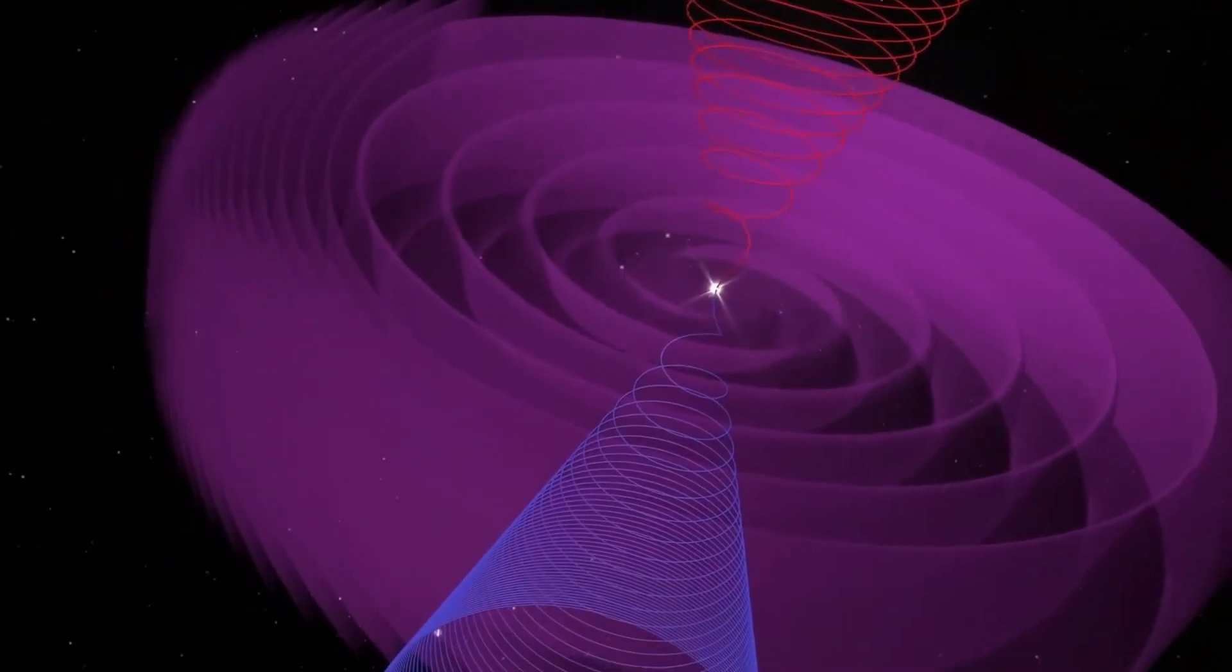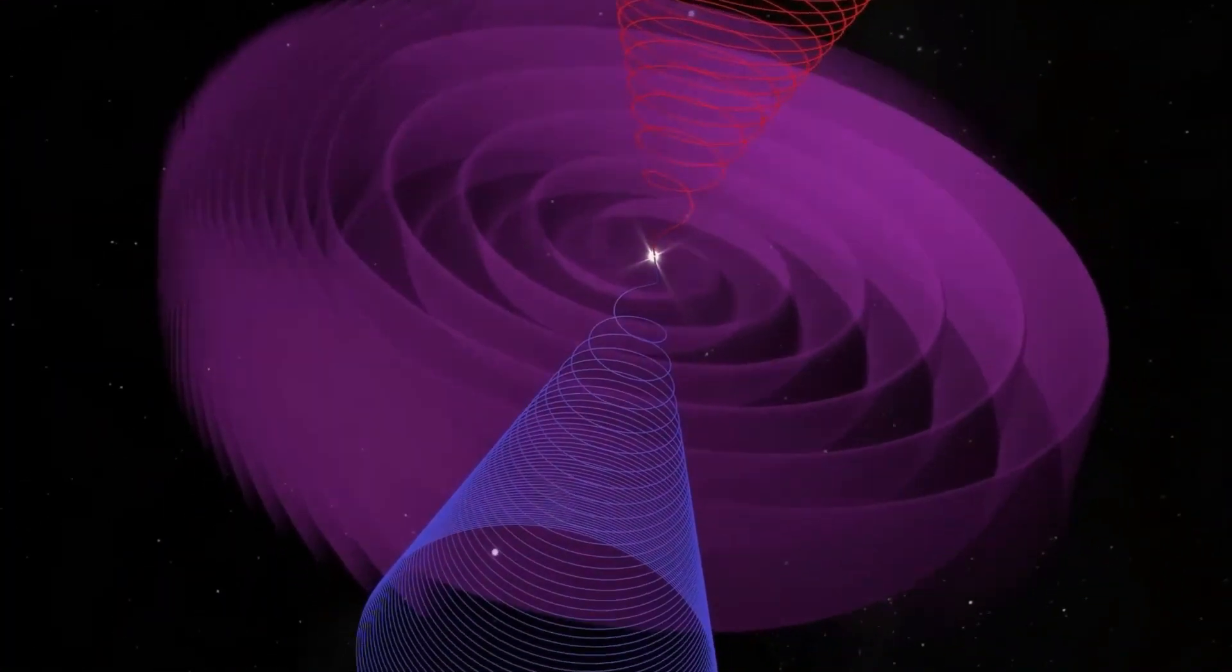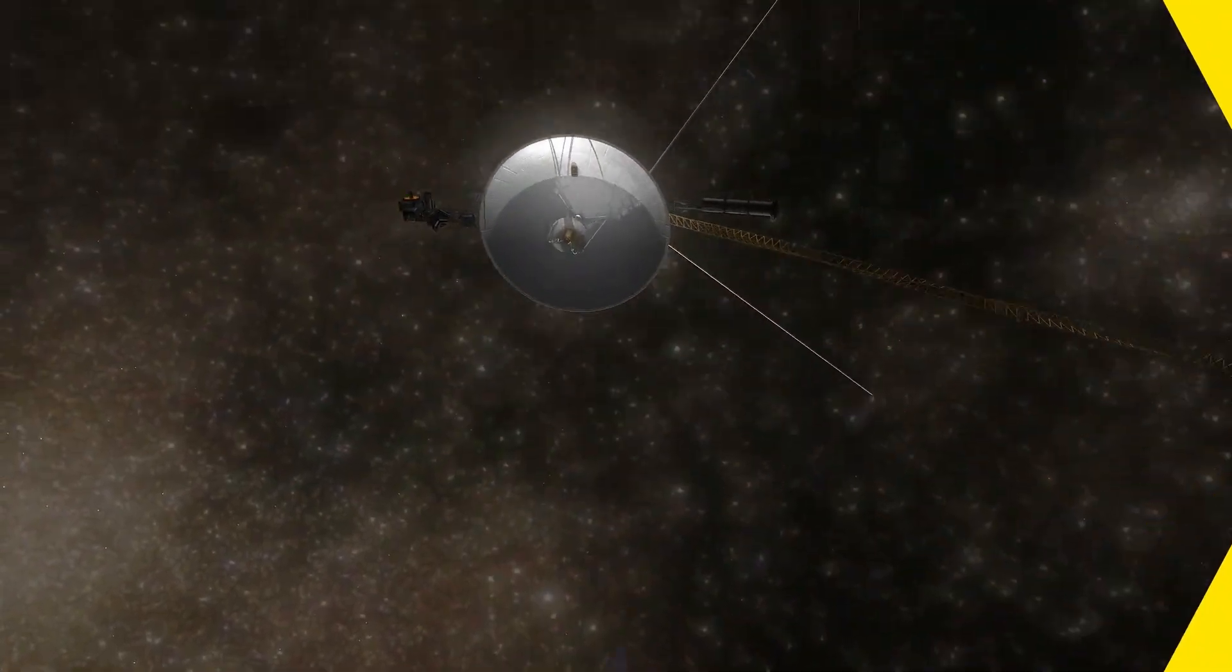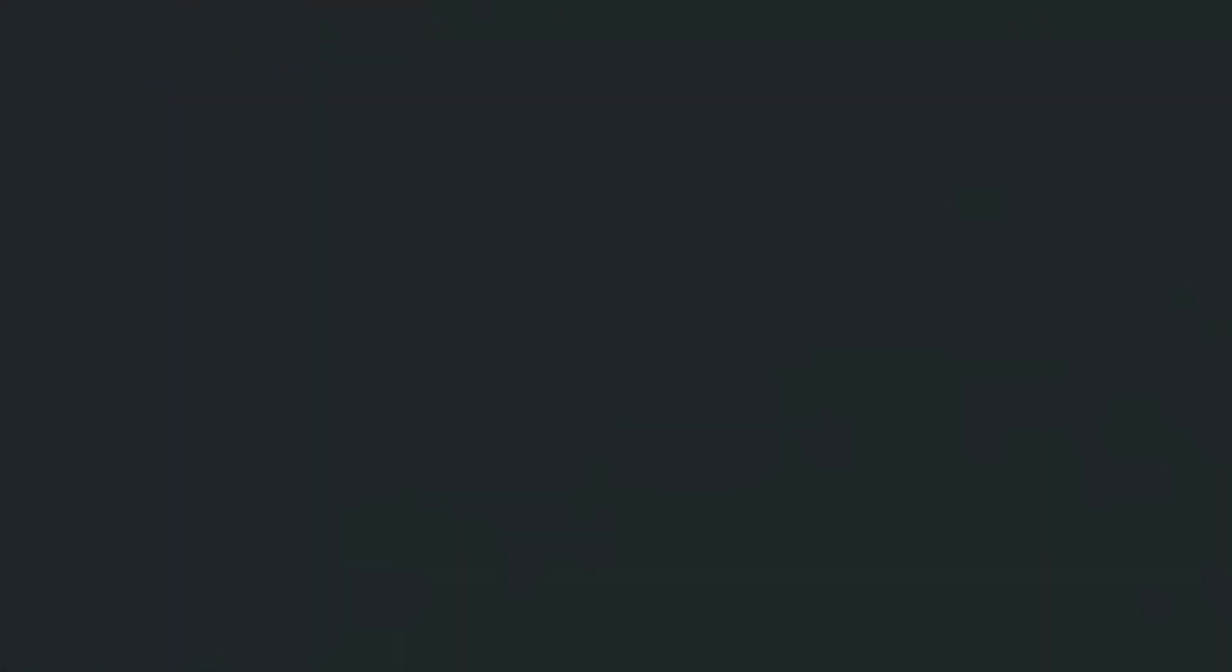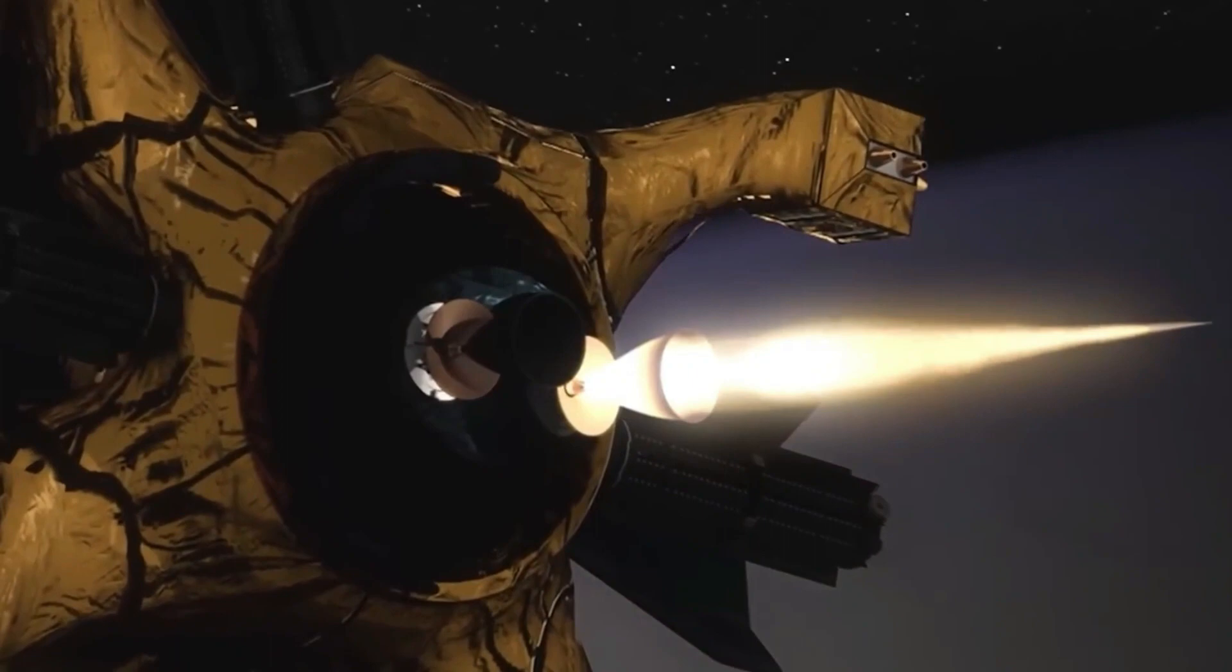To make matters worse, Voyager 1 can't be fixed reliably if something goes wrong. The less reliable our communication with the spacecraft will be, the faster the spacecraft goes. NASA can't make a spaceship that can go to the same place as Voyager 1 and do a rescue mission in time because it can't travel into interstellar space.